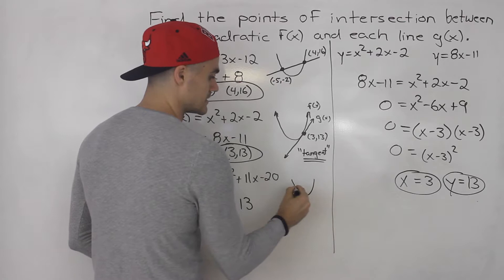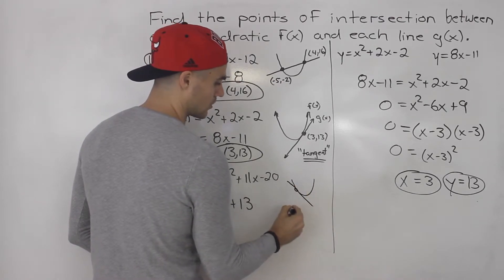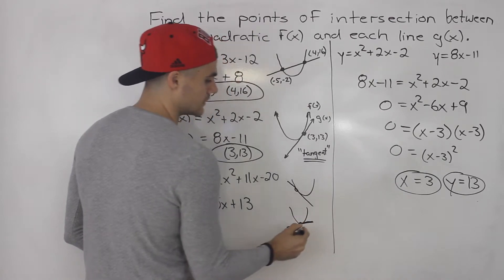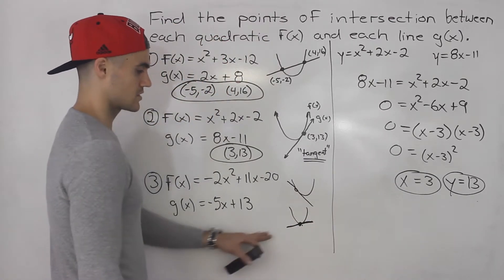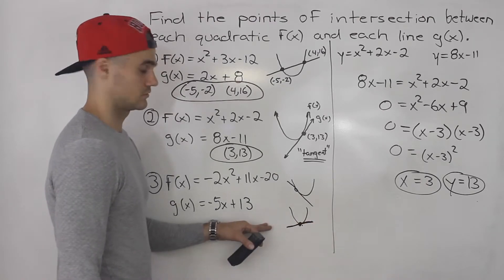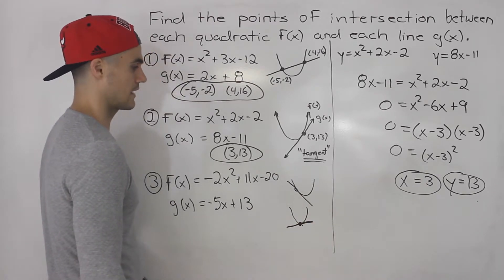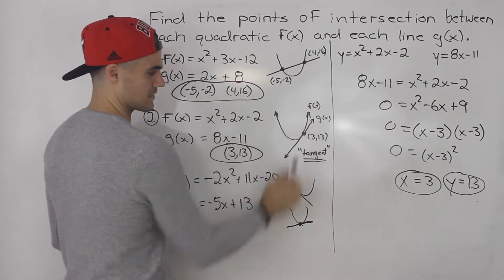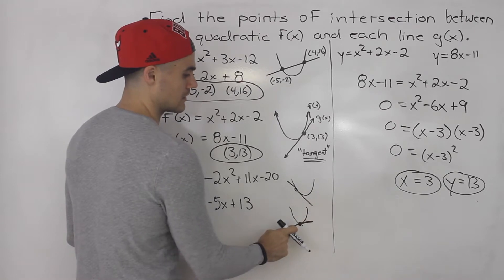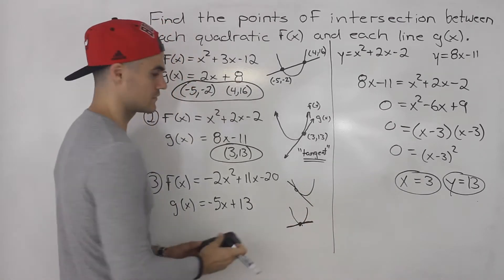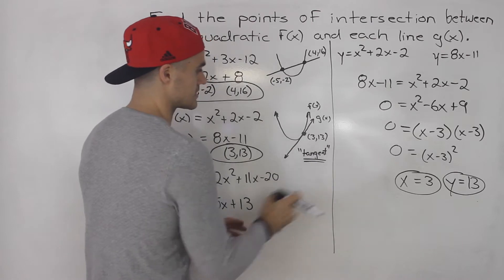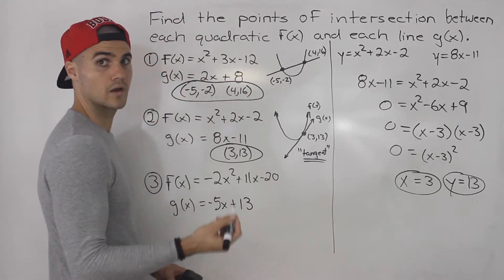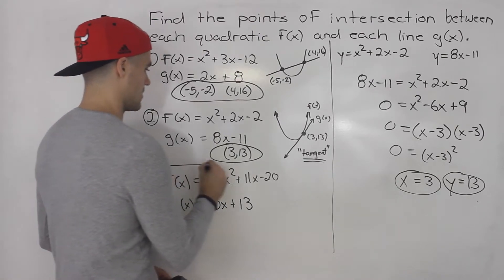It could also be a downward-sloping line, or it could even be at the vertex with a horizontal line where the slope is zero. But in this case the slope is positive. A negative-sloping line or a horizontal line at the vertex are also tangent — in all these cases there is one point of intersection.